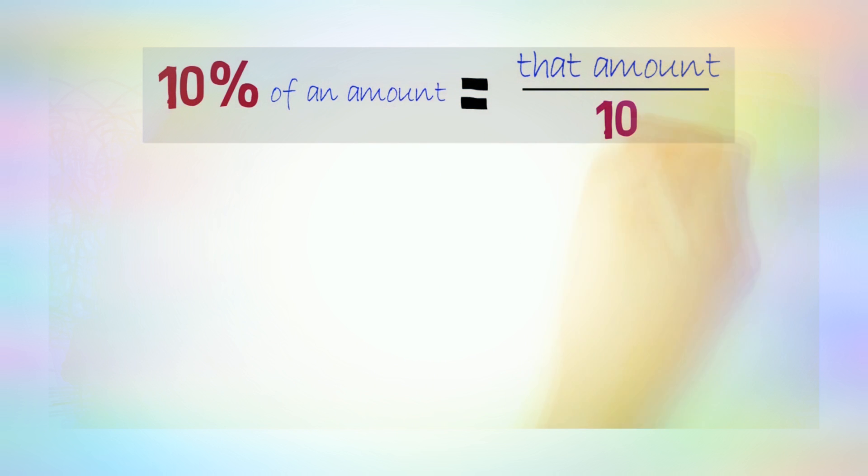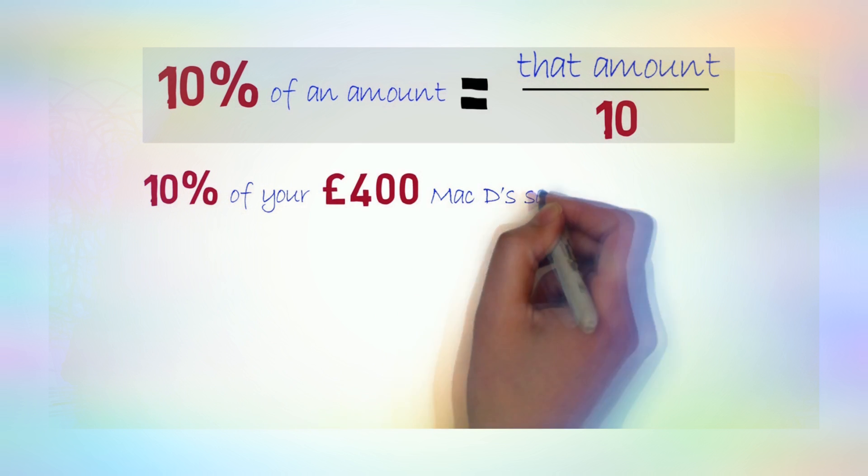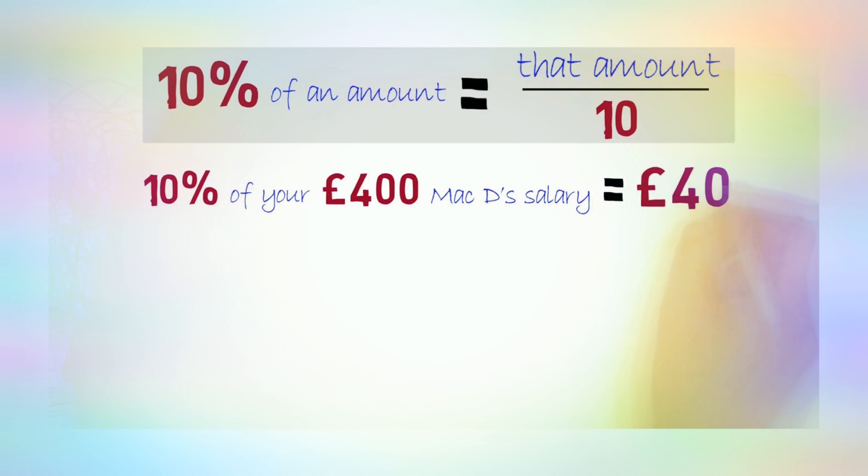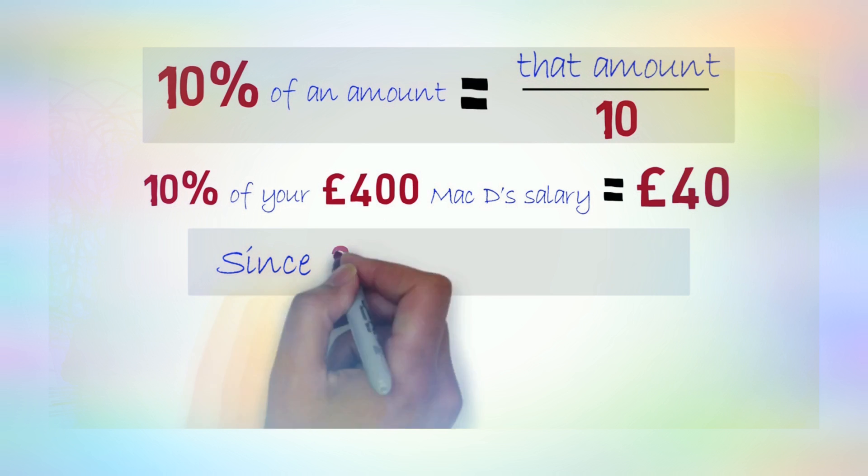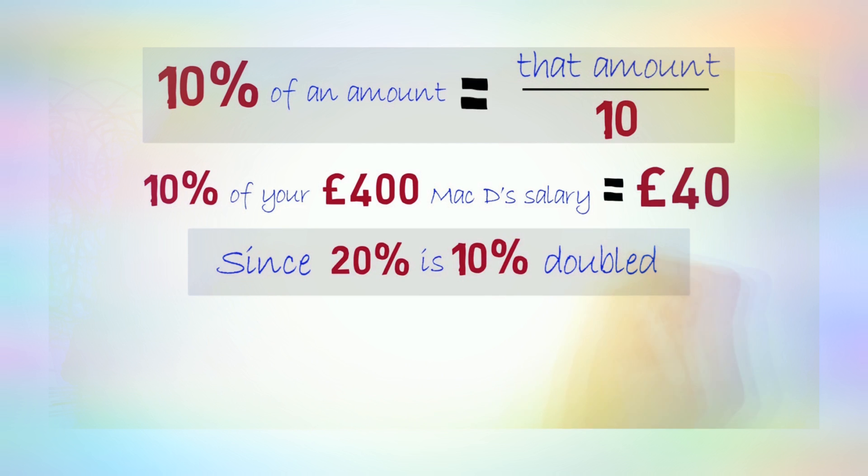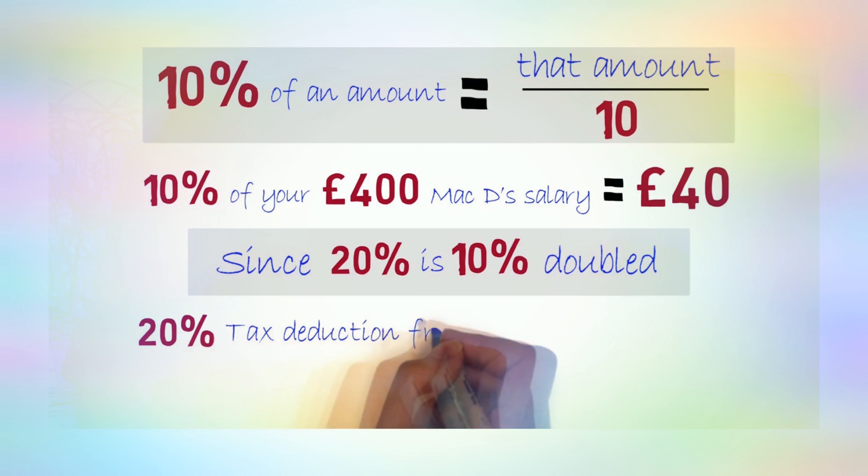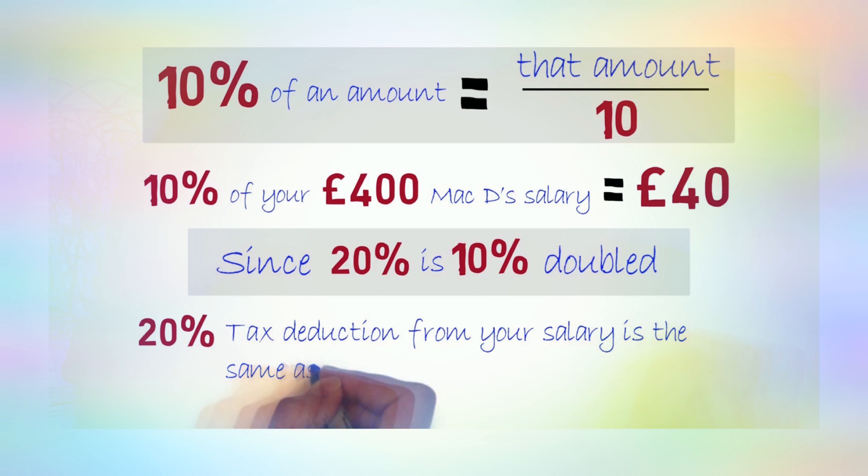So Femi, first, you've got to understand 10% of an amount is the same as dividing that amount by 10. So 10% of your £400 salary is £40. Since 20% is 10% doubled, a 20% tax deduction from your salary is the same as taking away £80. So you'll be left with £320.